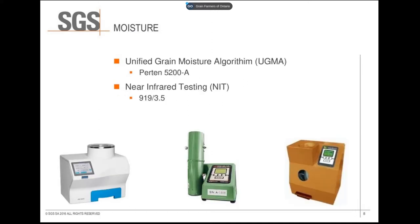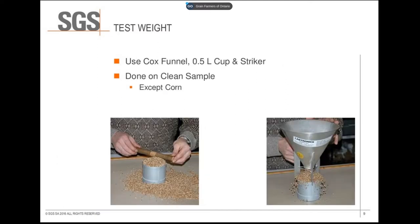Moisture is tested by either the unified grain moisture algorithm, which the Perten 5200 uses, or by near infrared testing, which is the technology the 919 meters have. Test weight is measured by putting approximately 700 grams of grain into a Cox funnel and pulling the slide from the bottom over a 0.5 liter cup. The striker is then run over the edge of the cup in a W pattern, excess grain is pushed off, and the grain in the cup is weighed and converted to kilograms per hectolitre using the CGC chart.